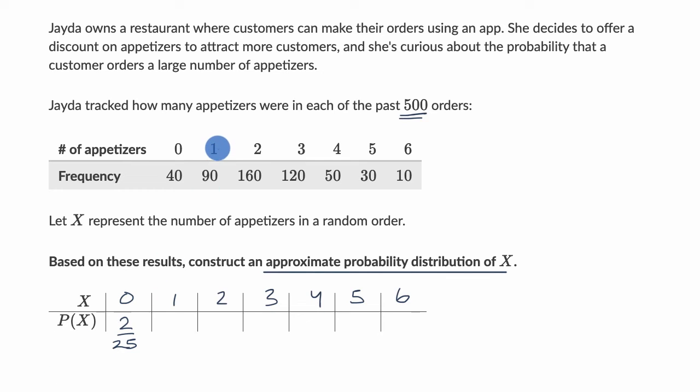The probability of one appetizer, well, that's going to be 90 over 500, which is the same thing as nine over 50. I think that's already in lowest terms. Then 160 over 500 is the same thing as 16 over 50, which is the same thing as eight over 25.